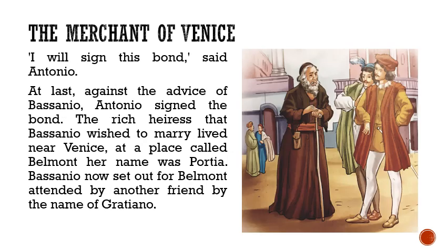Even though Bassanio was against this, Antonio signed the bond for the 3,000 ducats to help his best friend. Bassanio wanted to marry Portia, a rich heiress who lived in Belmont, and after taking the money, Bassanio went to Belmont with his friend Gratiano.